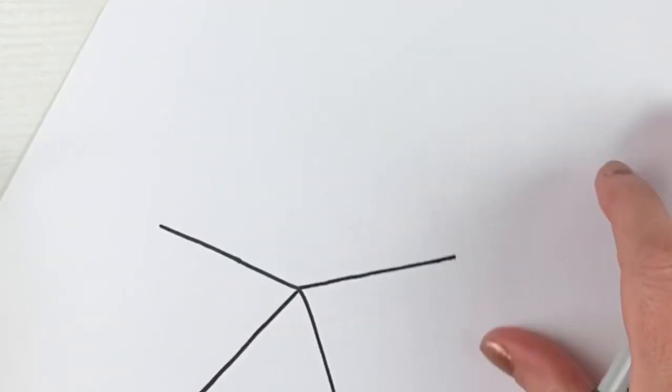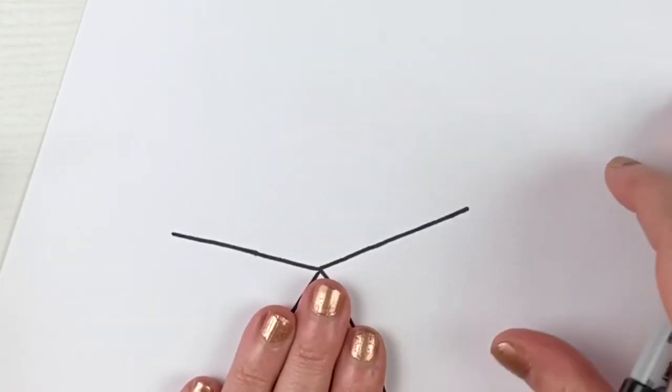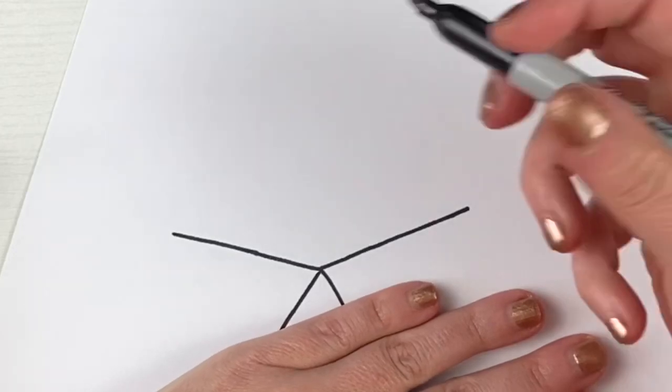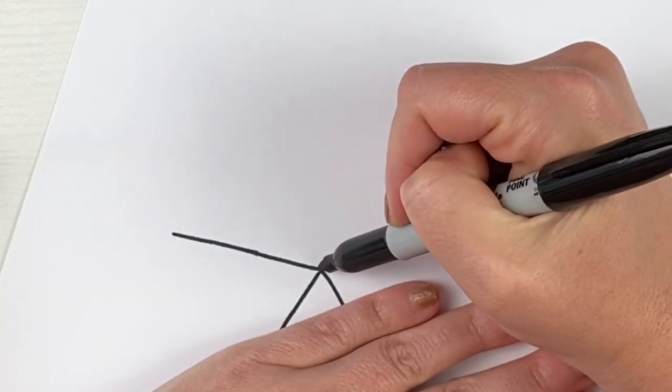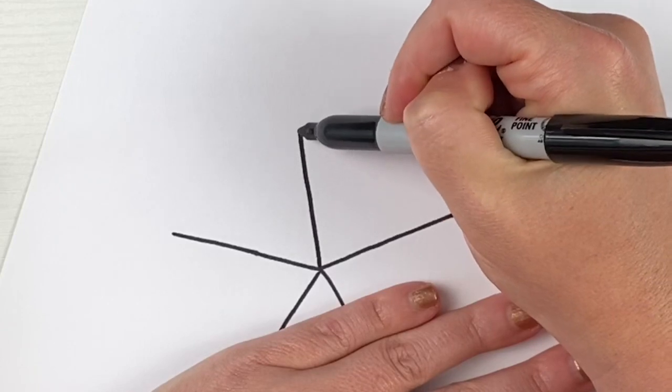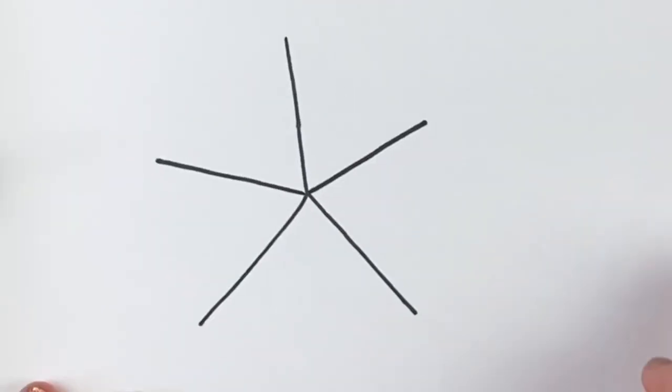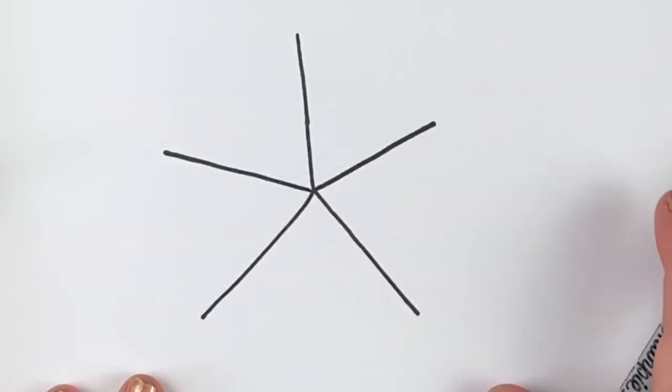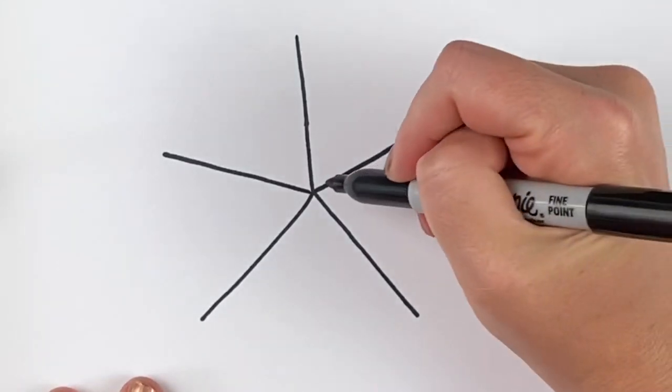So it gives me kind of two V shapes. I'm going to turn my paper again, cover those two lines so that I can see where the middle is, and make another line coming right out of the middle. So you end up with this kind of a star shape with five lines. They're all about the same length.